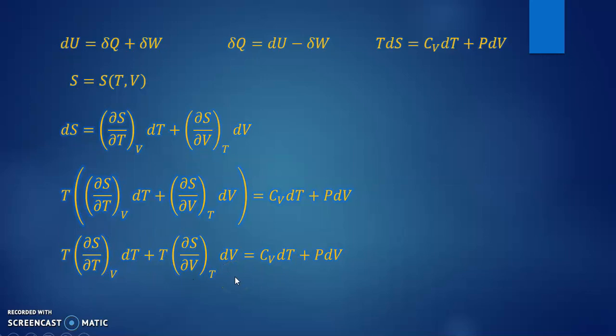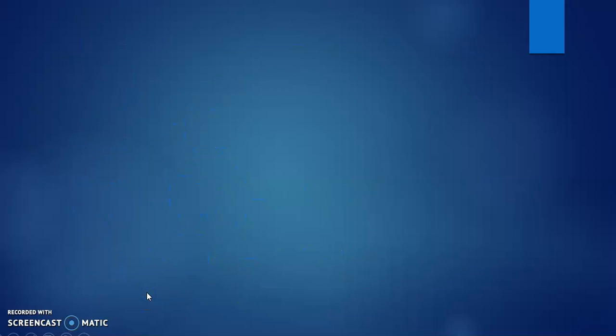In this part, we can also compare the coefficients. For example, we can compare the coefficients on the left side of dT, and that coefficient must be equal to the coefficients that we have in the right side. This situation is similar to the coefficients for dV.